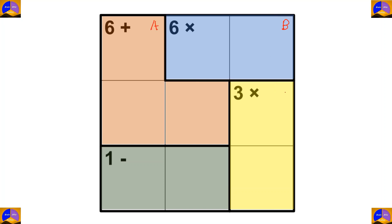Now let's solve a three by three puzzle. This will be cage A, this will be cage B, this will be cage C, and this will be cage D. In cage A there are three cells and the operation is addition — after adding, the result must be six, so the only option is one plus two plus three. In cage B there are two cells and the operation is multiplication — after multiplying, the result must be three, so the only option is three times two.